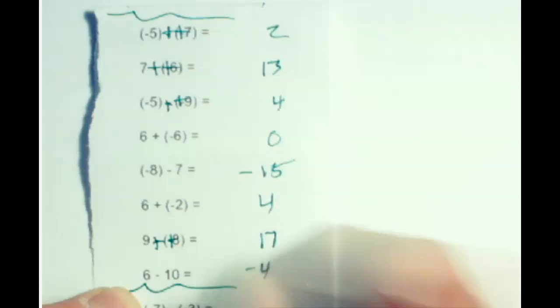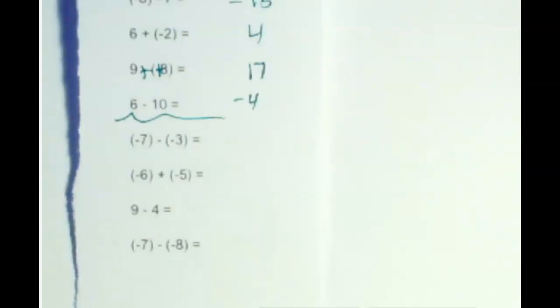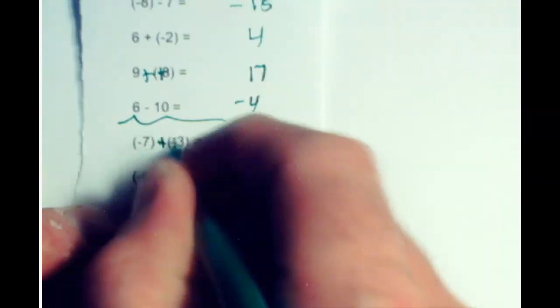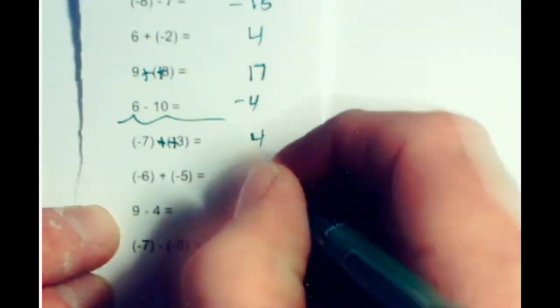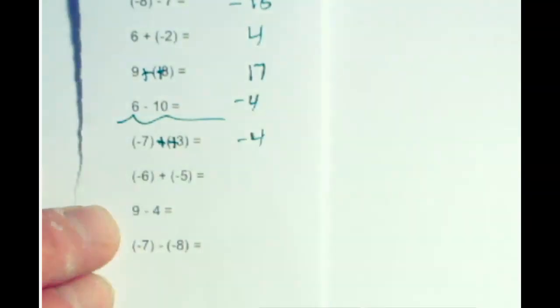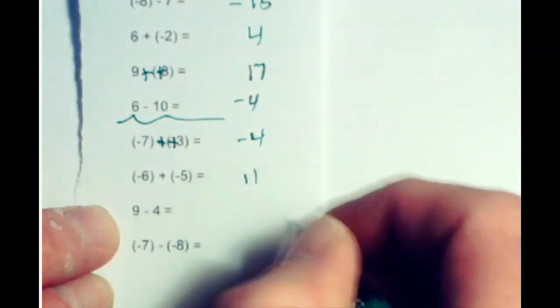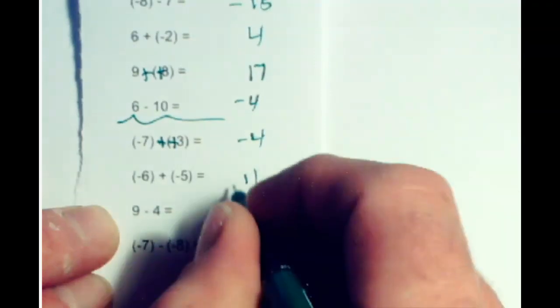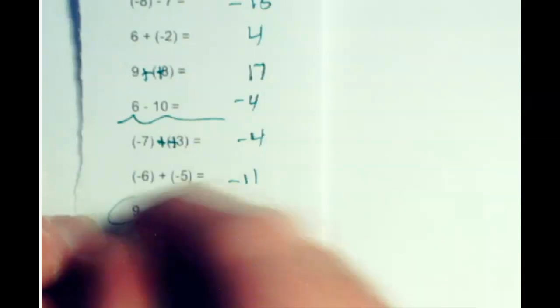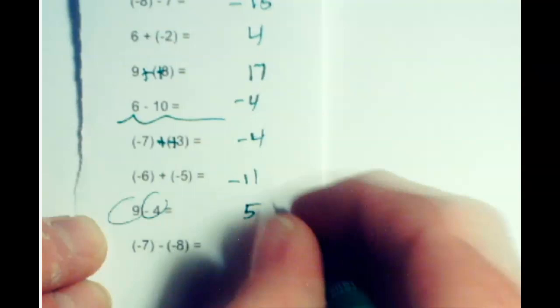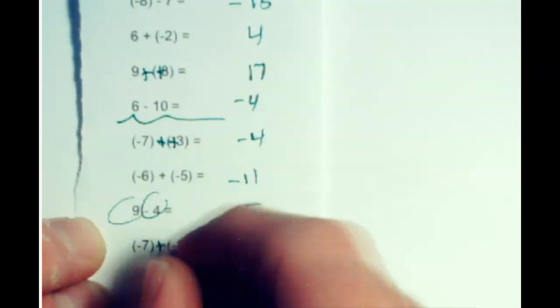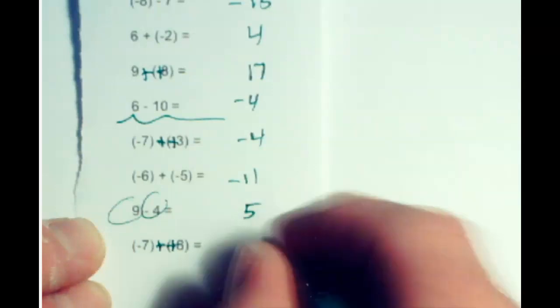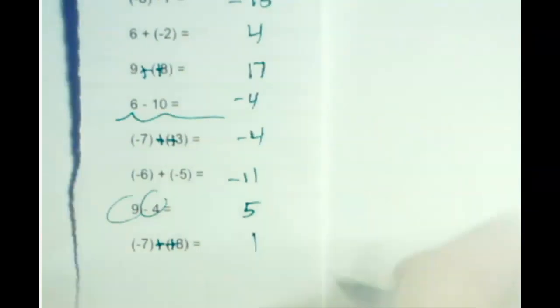Alright, last 4 — I'm just going to review them the old school way. Go ahead and do these. You got 7 and 3 — it's a double shot, now you have different signs — the difference between 7 and 3 is negative. These are the same signs — add them up, 6 and 5. These are different signs — you got a positive and a negative, the difference is positive. This is a double shot — now you've got different signs, the difference between 7 and 8 is positive. Thanks for listening.